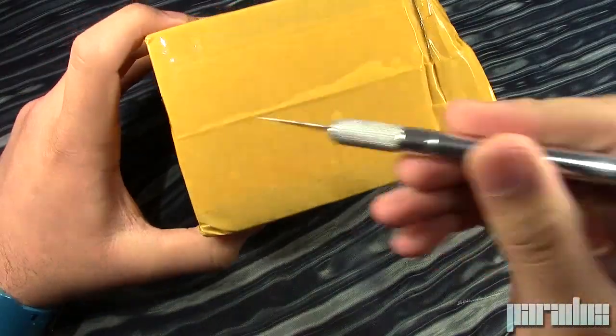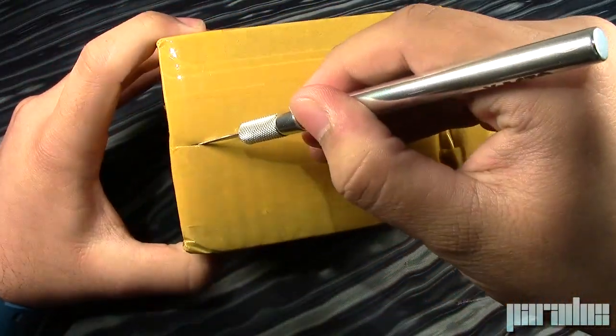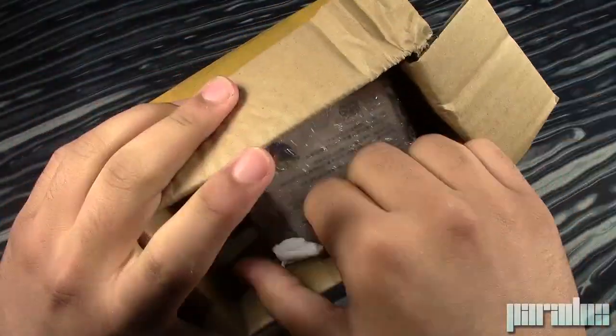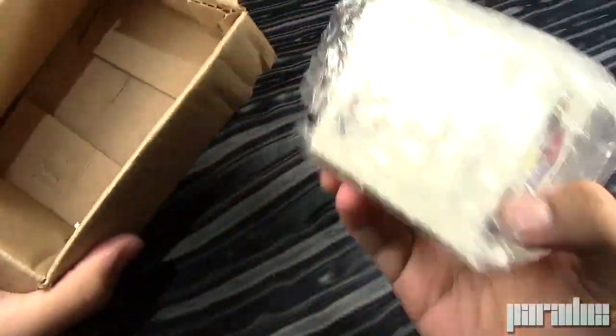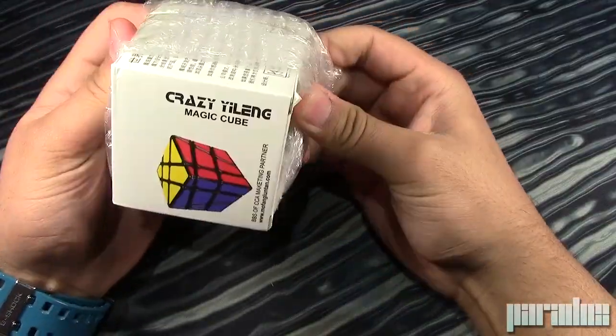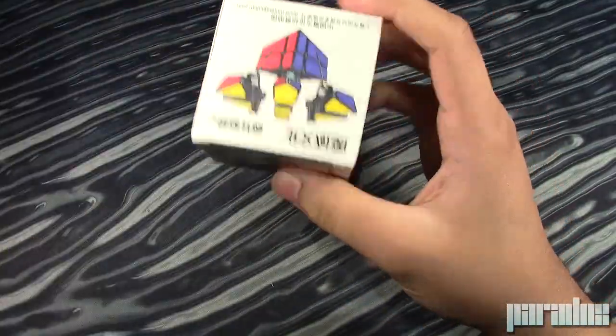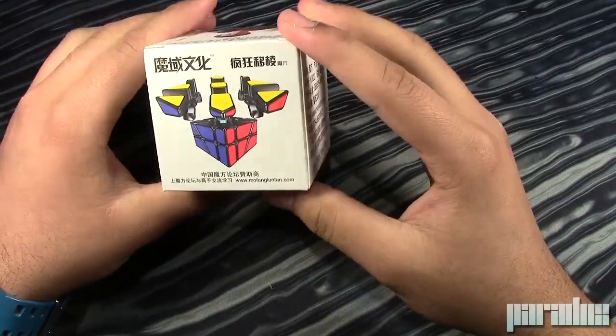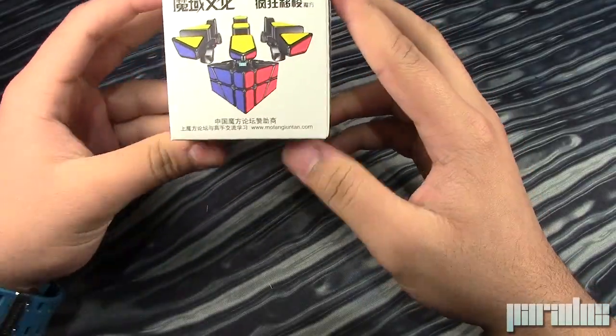Alright, so let's open this up. So in here we've got this cube. So here it is, the Crazy Yilang. It's supposed to be like a weird shape mod of a 3x3.